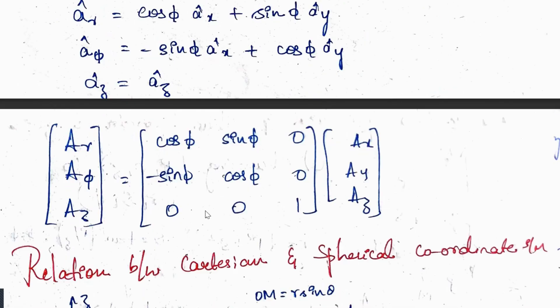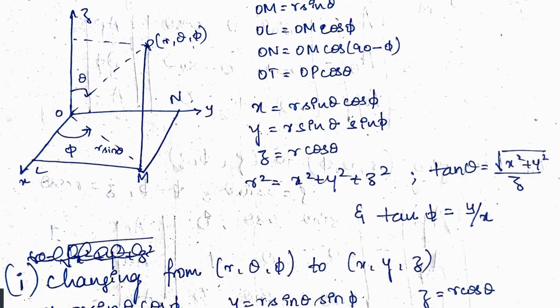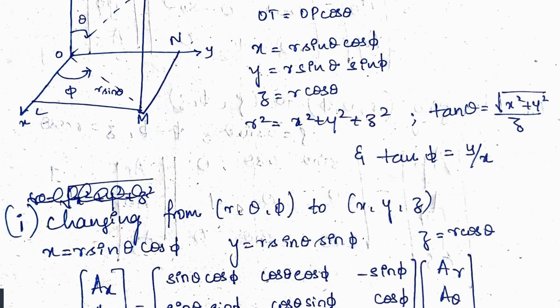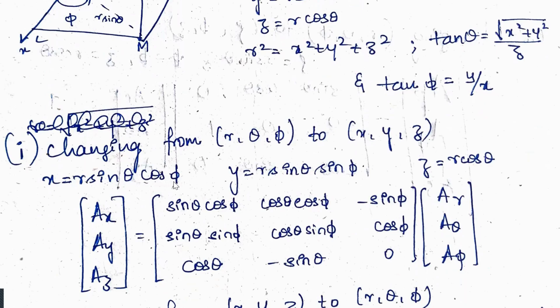Next is the relationship between Cartesian and spherical coordinates. From geometry: OM = r·sinθ, OL = OM·cosφ, ON = OM·cos(90°−φ), OT = OP·cosθ. So x = r·sinθ·cosφ, y = r·sinθ·sinφ, z = r·cosθ. Also r² = x²+y²+z², tanθ = √(x²+y²)/z, and tanφ = y/x.